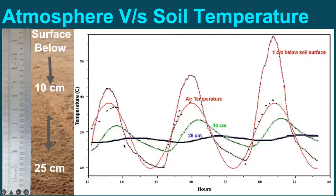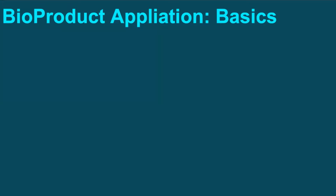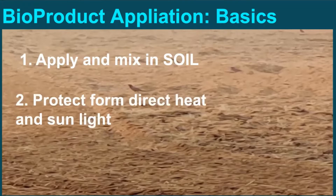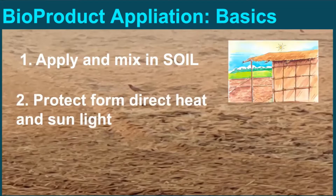At 10 cm, the green line shows some variation; however, soil temperature is below air temperature. While at the top 1 cm, the soil temperature is much higher than the air temperature. And this is the reason no bioproduct should ever be applied on the soil surface and left unattended, because higher temperatures may kill the microbes in the very beginning.